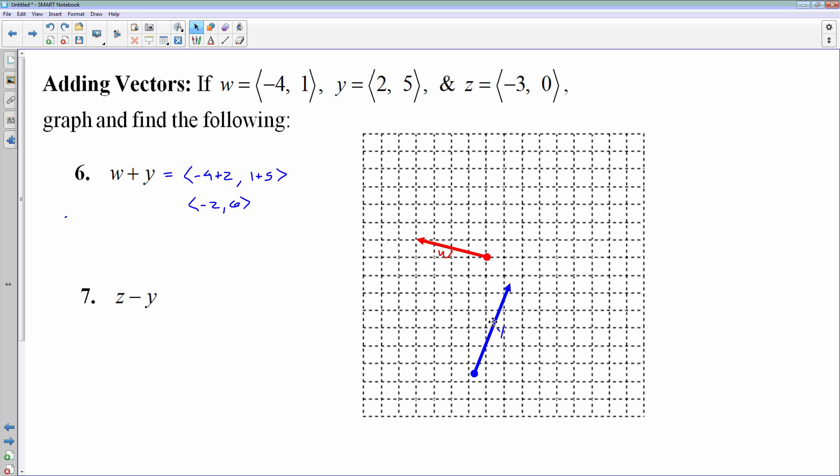So you start with w and then I want to add y to it. I put y on the end. And then the sum of w plus y is what you have from your very initial point to your final terminal point. That right there is the vector w plus y in green. And if you notice w plus y, I went from my initial point to the right 2 and up 6, which is exactly what we said initially.